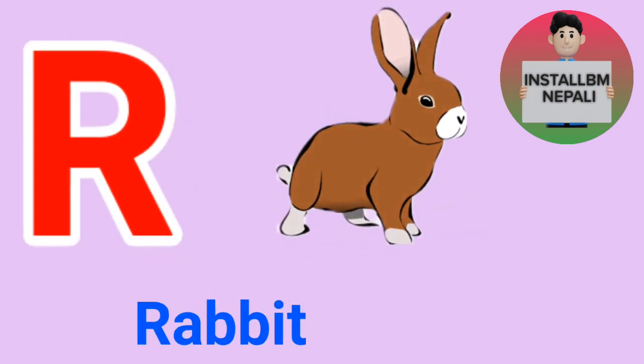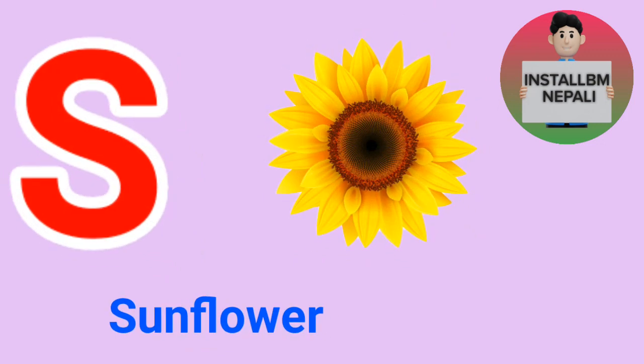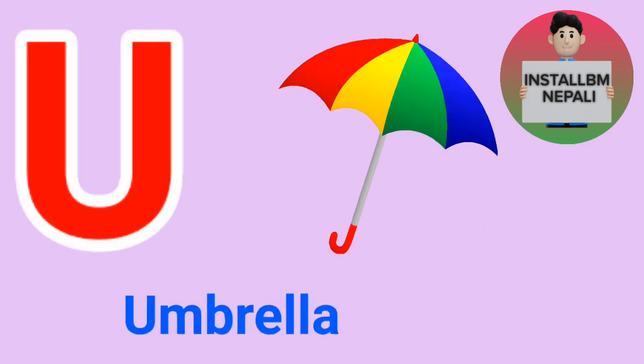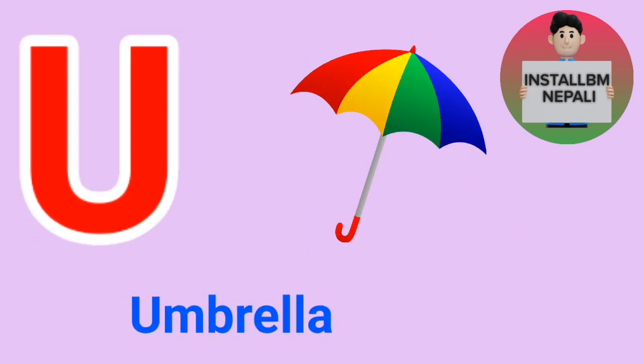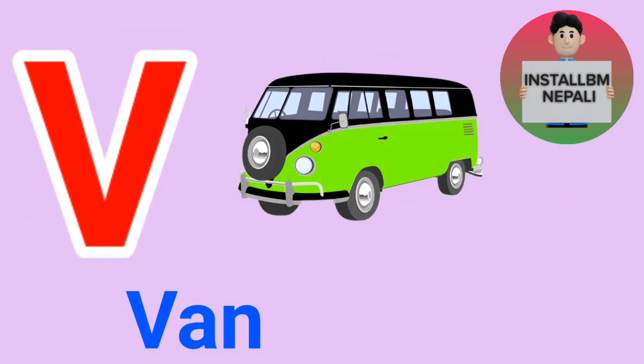R for Rabbit, S for Sunflower, T for Tiger, U for Umbrella, V for Dhan.